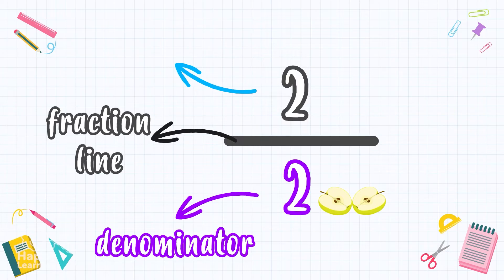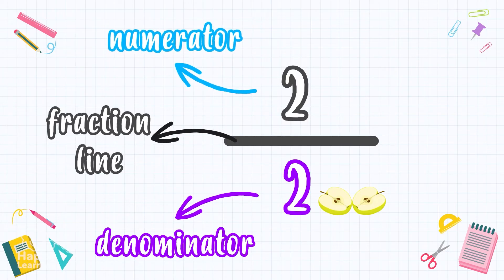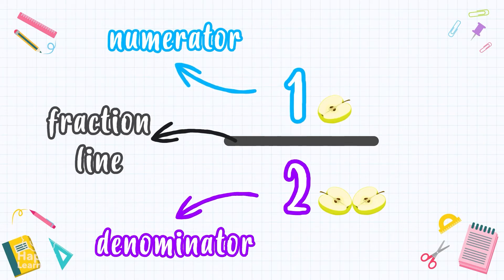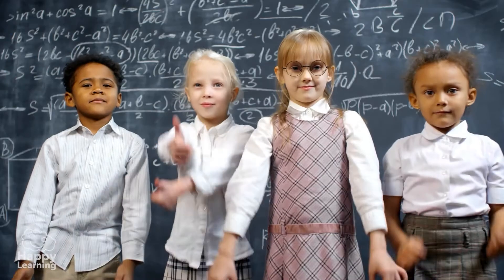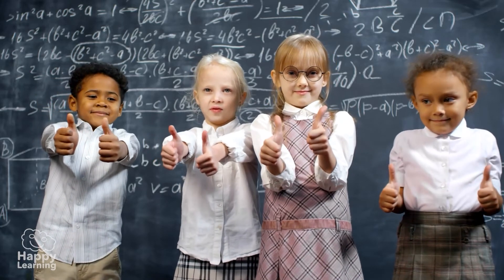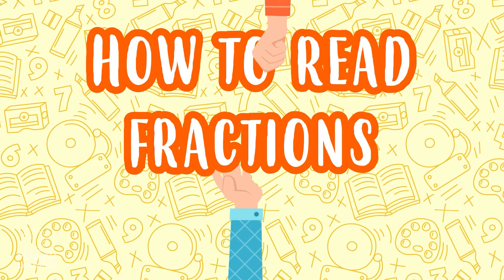The top number is called the numerator. The numerator indicates how many parts of the whole number we have taken — in this case, how many parts of the apple the goat has eaten. It's a one because it ate one half. Fantastic! Now we know how to write a fraction. Now let's learn how to read it.